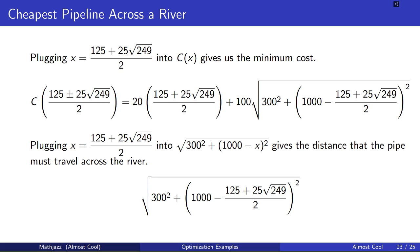This square root of 300² plus (1000 - (125 + 25√249)/2)² is the distance that the pipe takes diagonally across the river, and this expression on the second line is the cost of building a pipe with those particular dimensions.